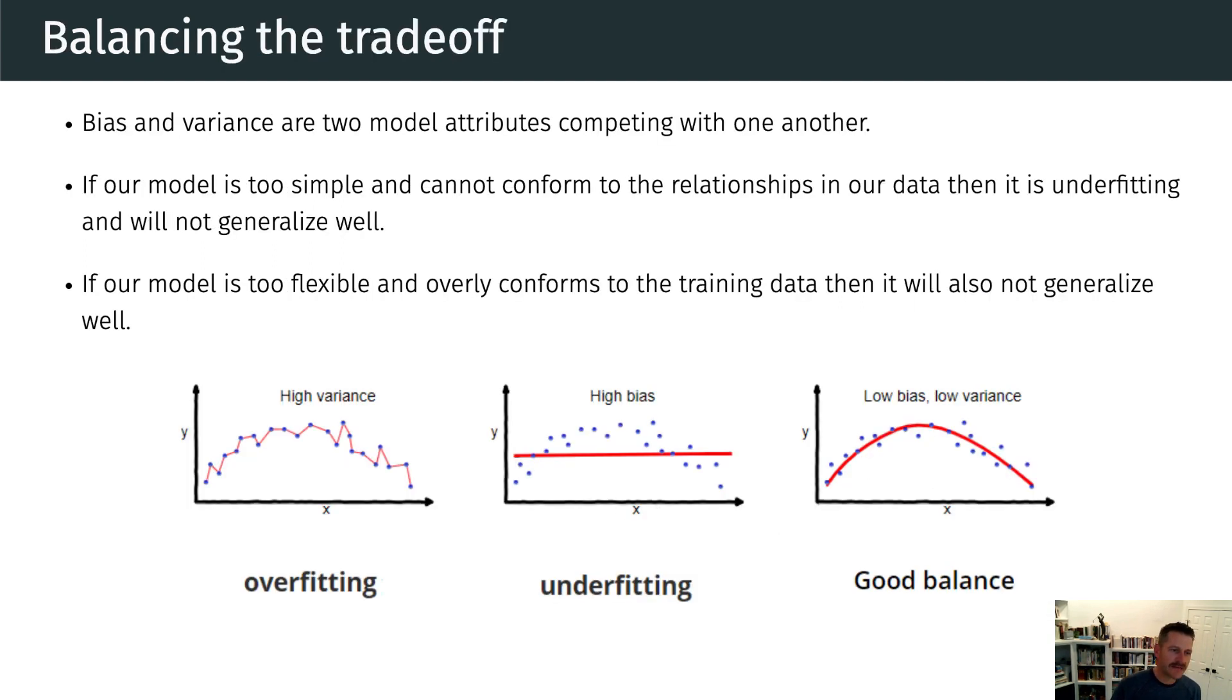So we can think of bias and variance as kind of these two model attributes that are competing with one another. If our model is too simple, it cannot conform to the relationships in our data, then it is underfitting, it will not generalize well. So we can kind of see that with this middle picture here. However, if a model is too flexible, it will conform too well to the training data, such as what we see here on the left. And it will also not generalize well.